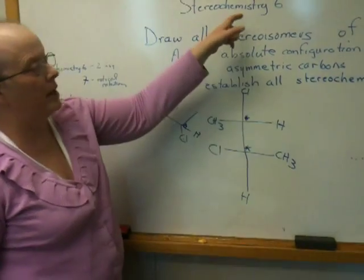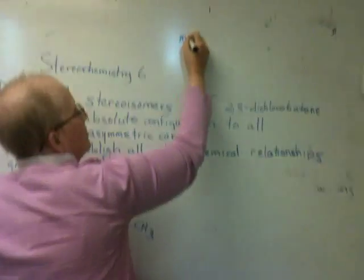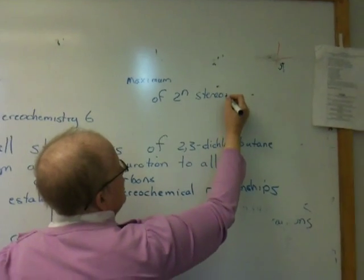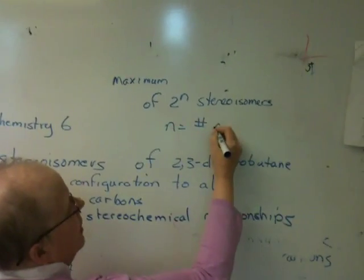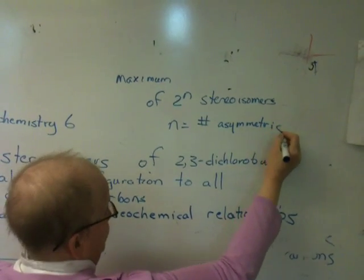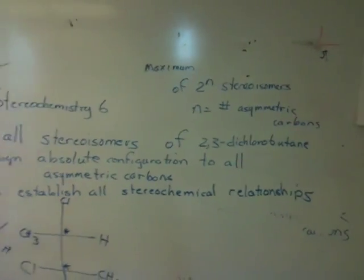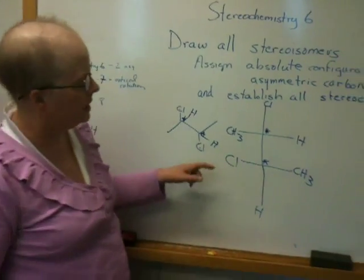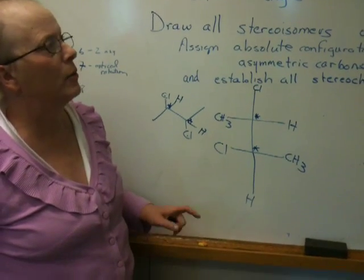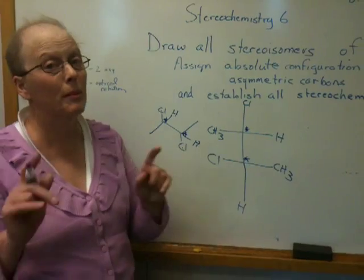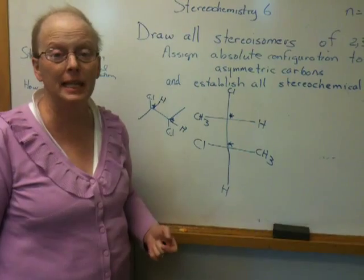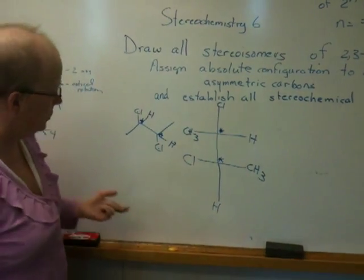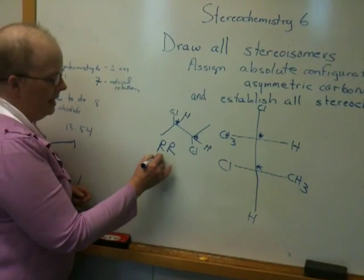As you learned in Stereochemistry 5, there should be a maximum of 2^n stereoisomers, where n equals the number of asymmetric carbons. This is not a particularly important formula, but it is somewhat useful when you're trying to draw stereoisomers because it puts an upper limit on the number you would draw. In this case, because there are 2 asymmetric carbons, we expect a maximum of 2^2, so a maximum of 4 stereoisomers. But remember, it's a maximum — it may not be the exact number.